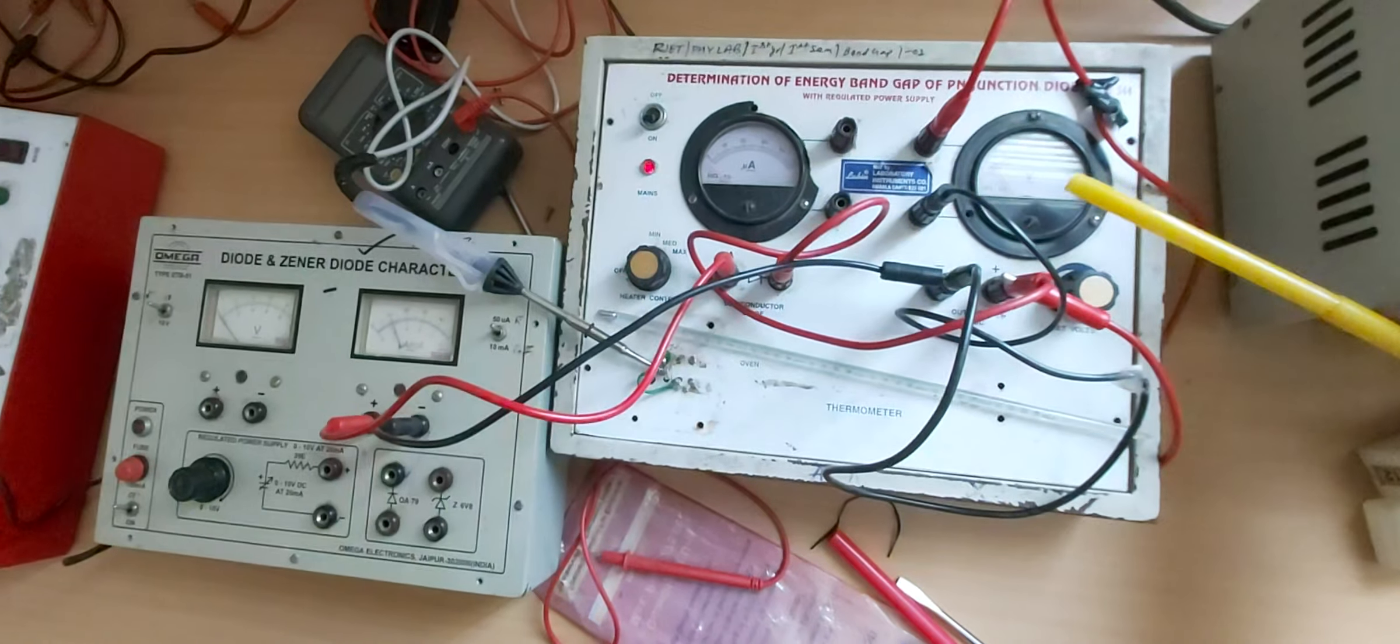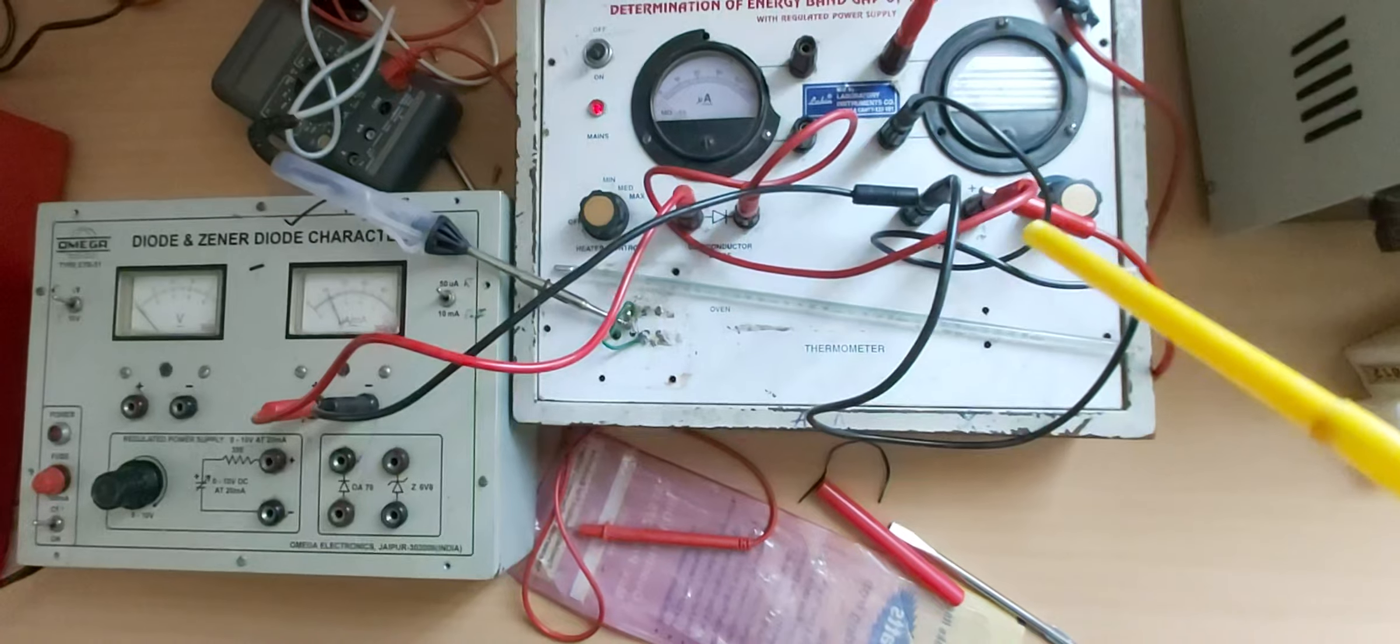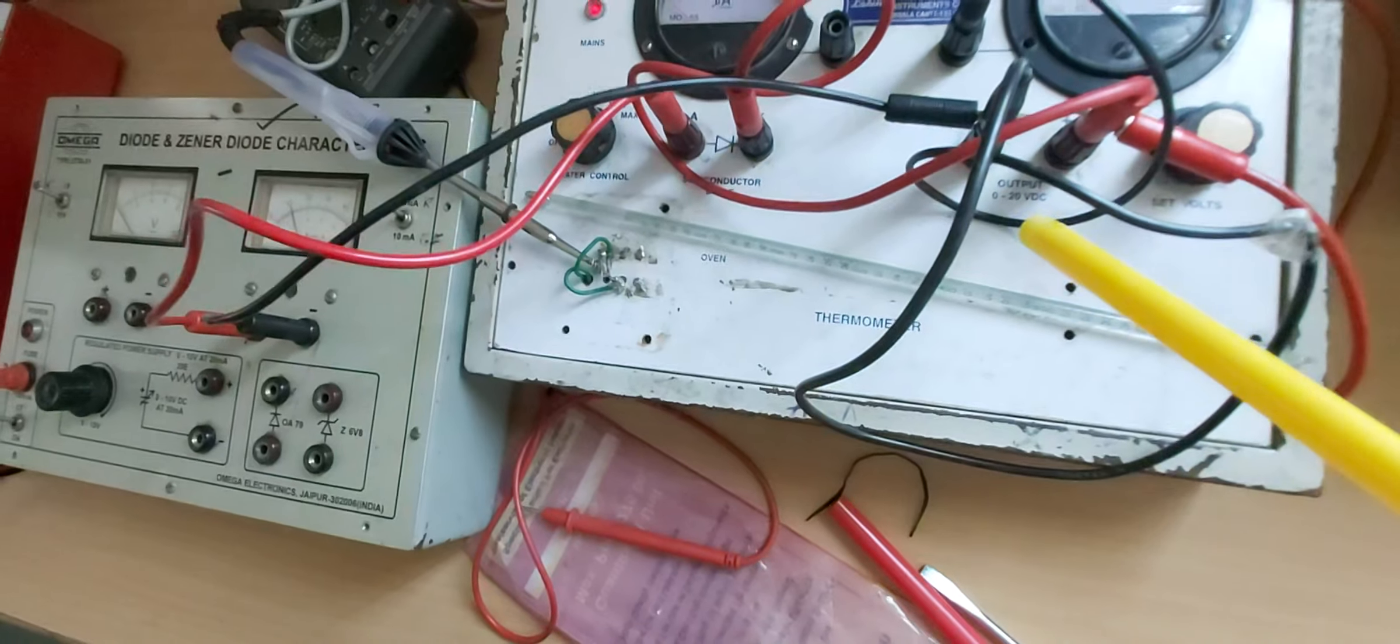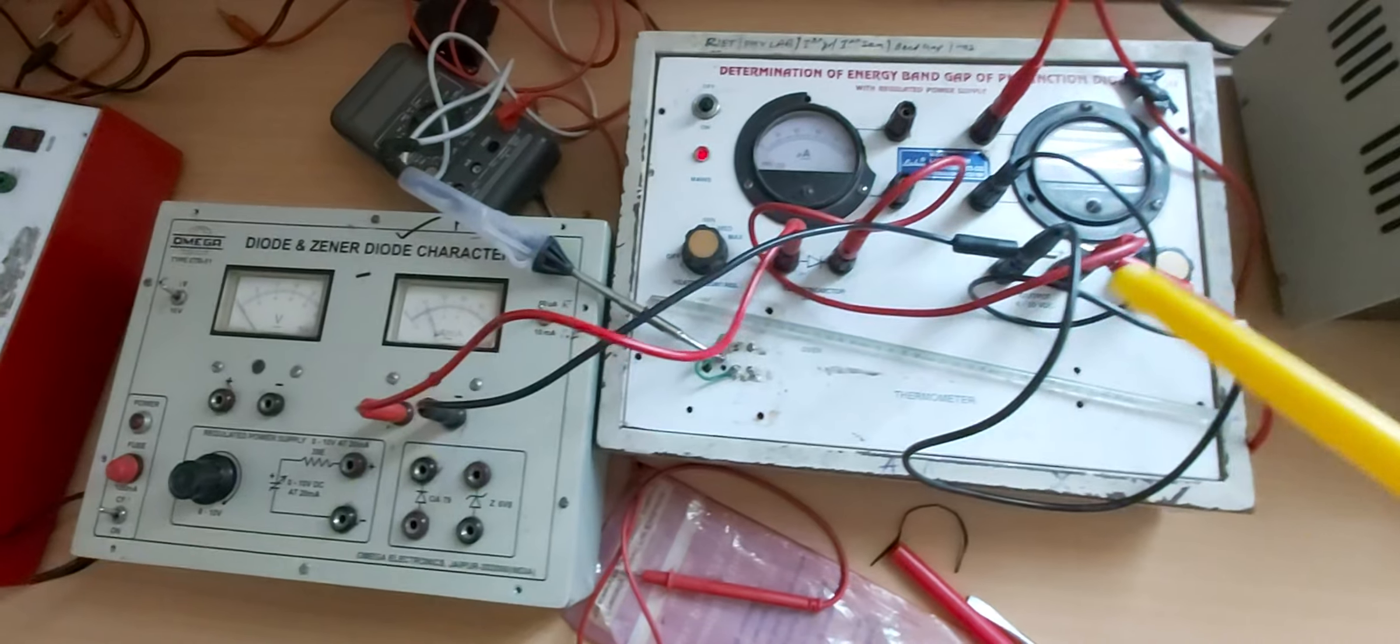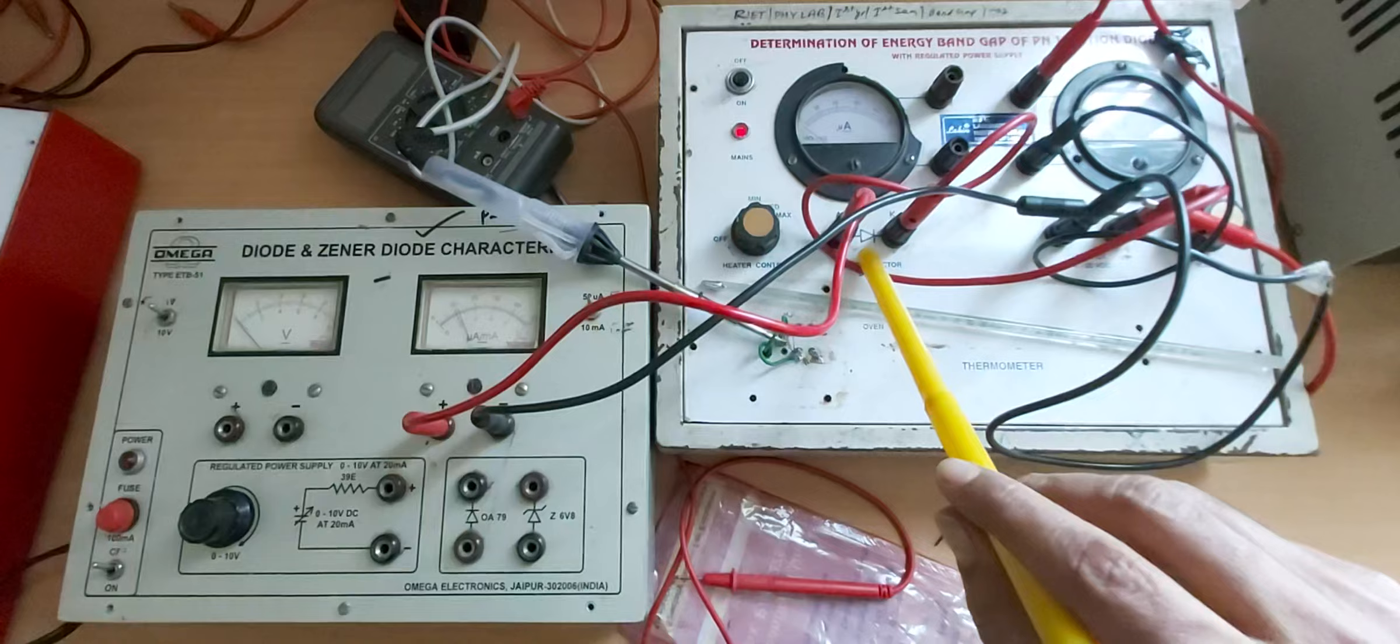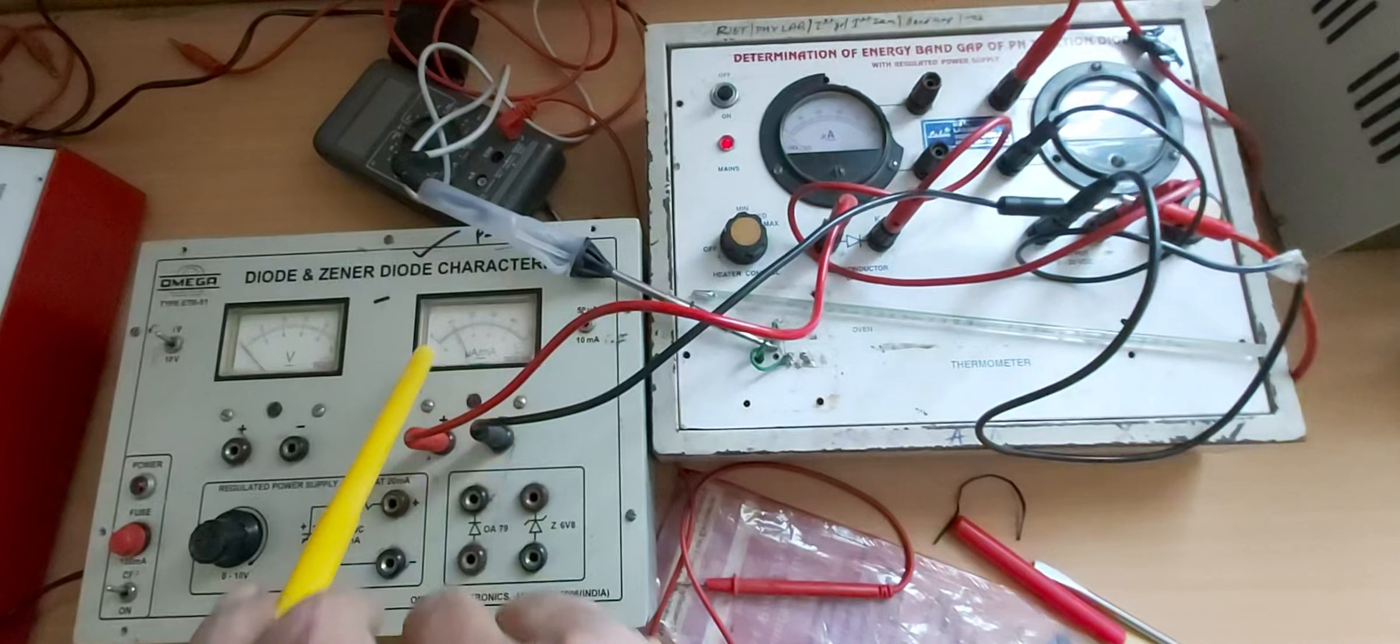In this setup, voltmeter is connected across the supply battery which can vary from 0 to 20 volts. We will reverse bias a diode which is here and we will monitor the reverse saturation current flowing through it.